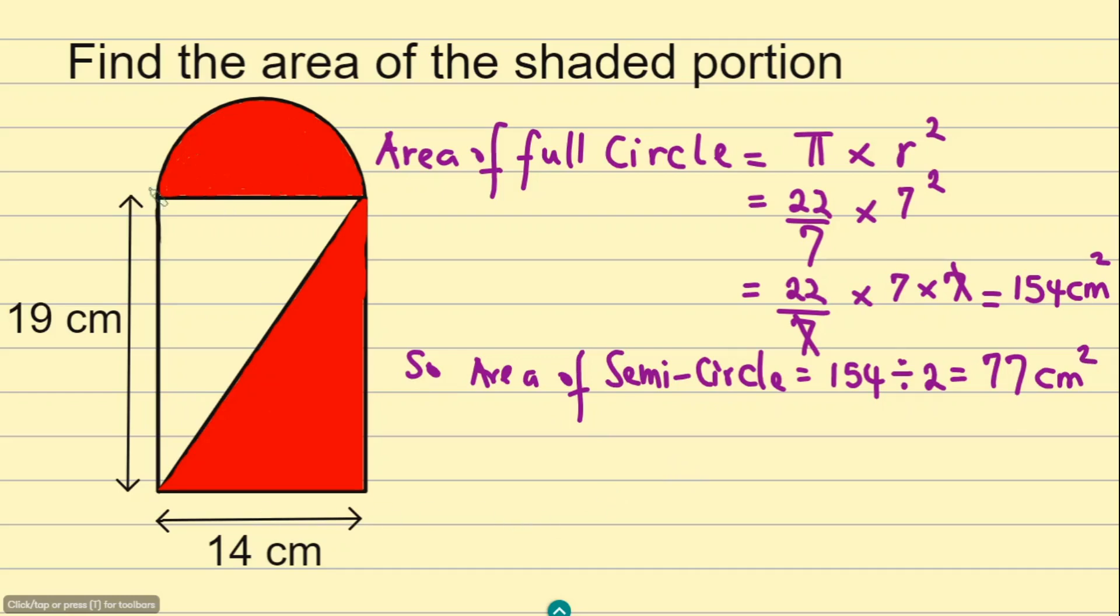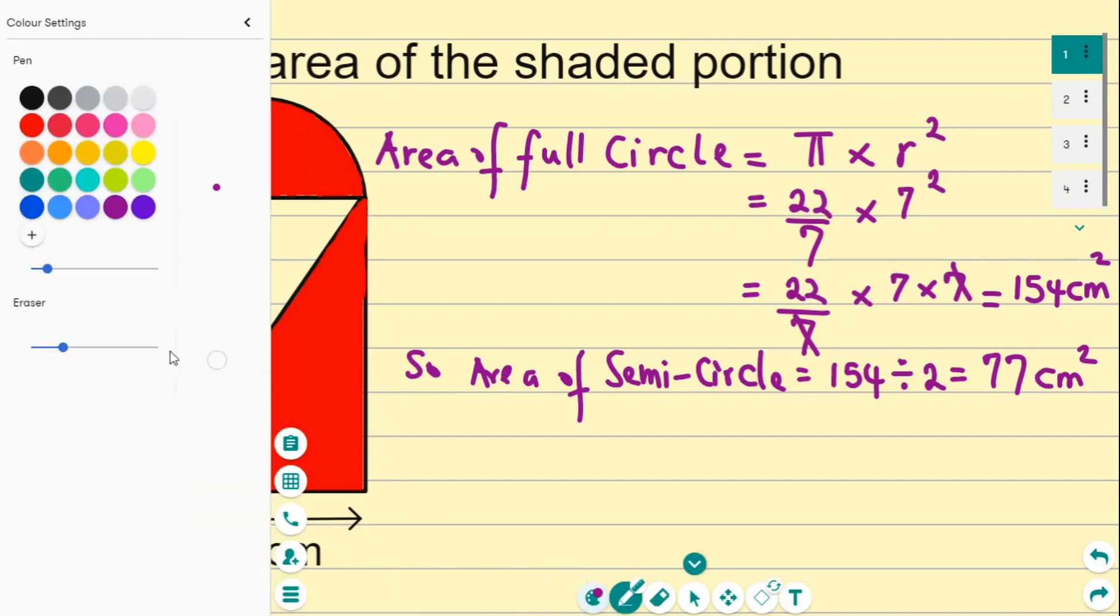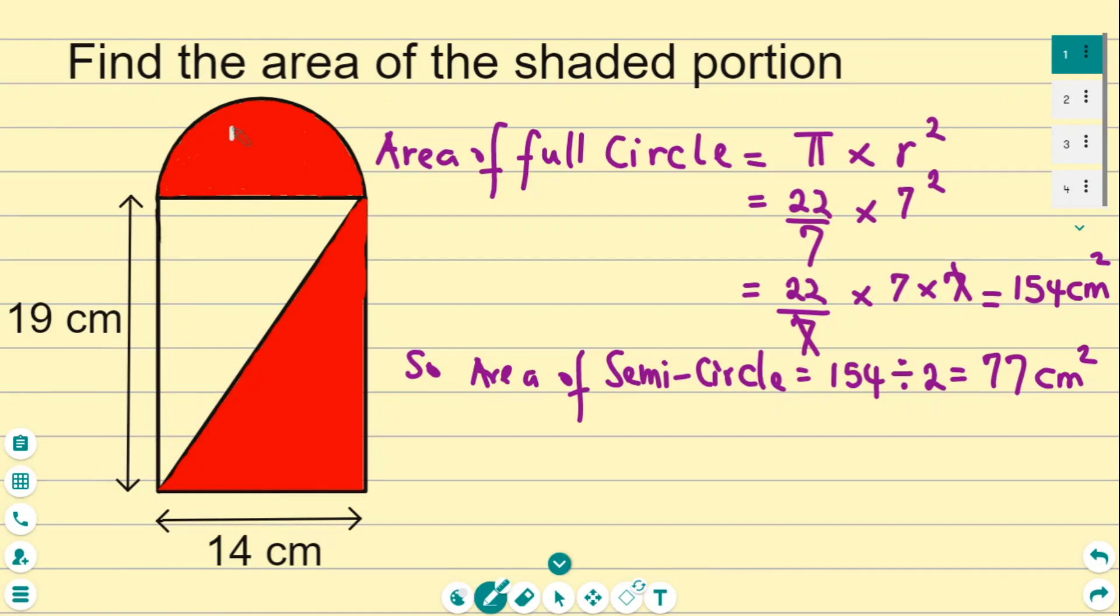So the area of the semicircle here is actually 77. I'm going to label here 77 centimeters squared. That's the area of the semicircle.